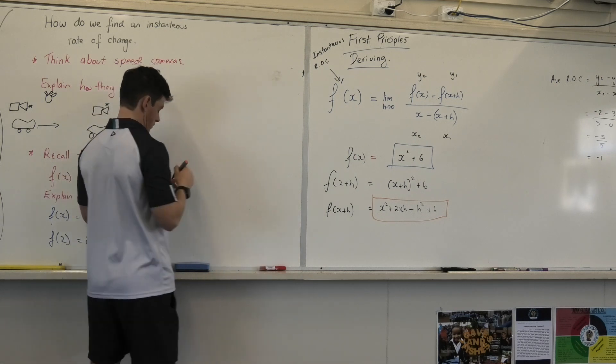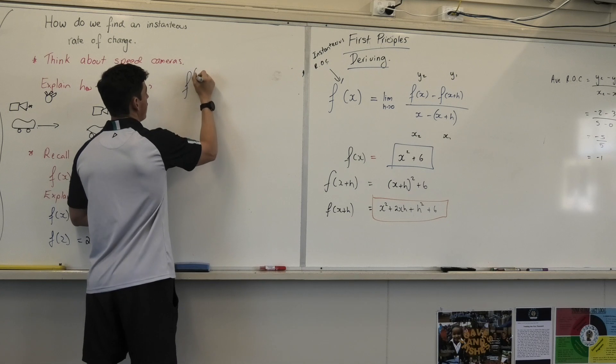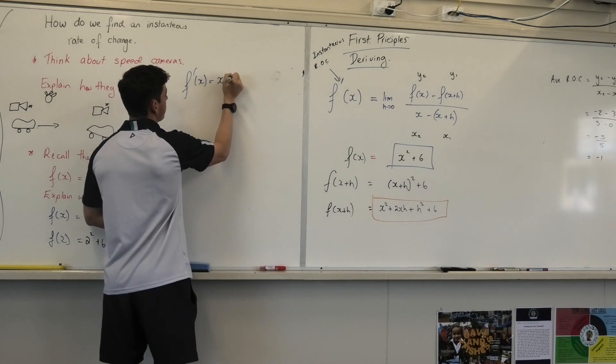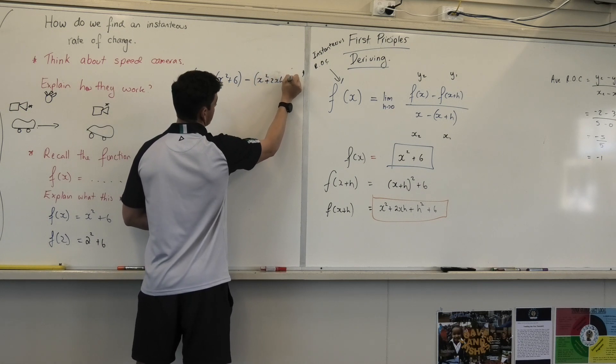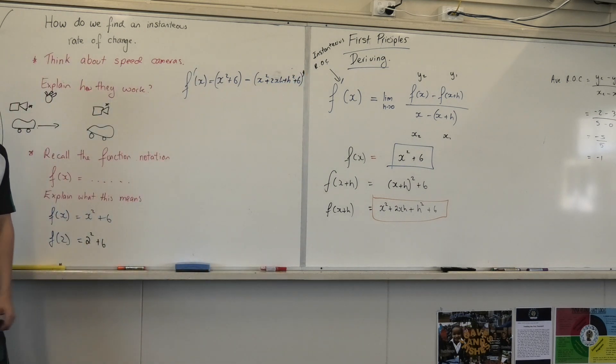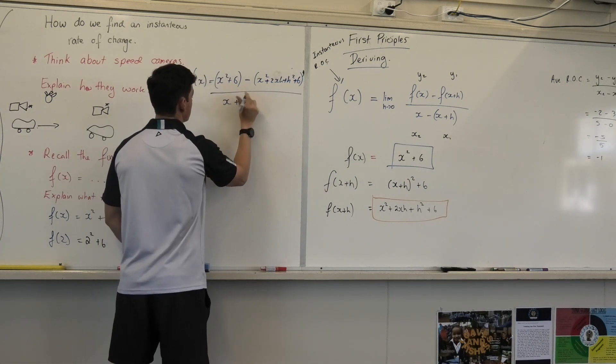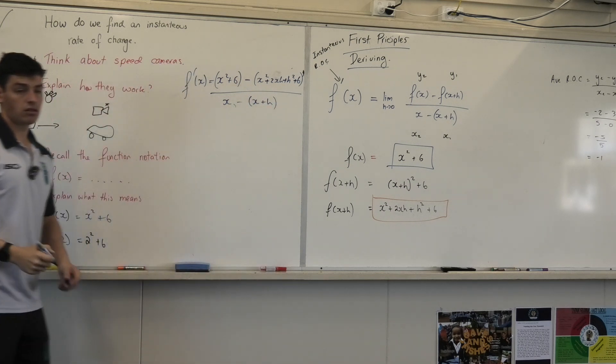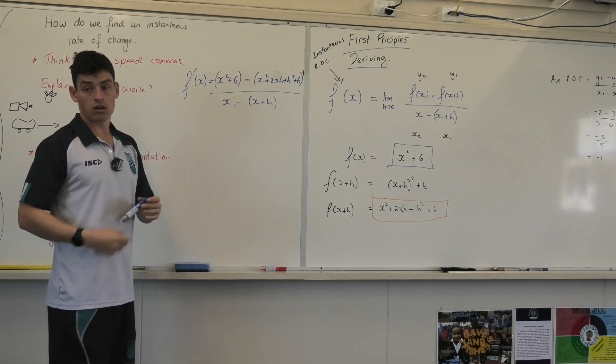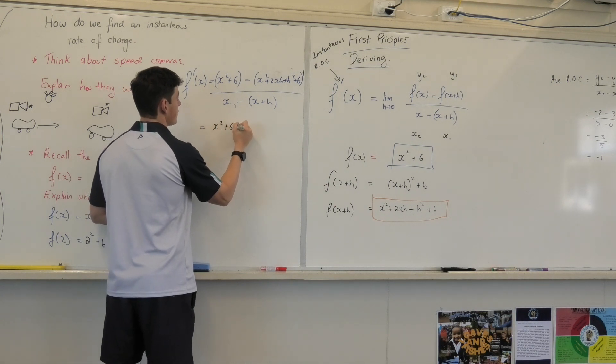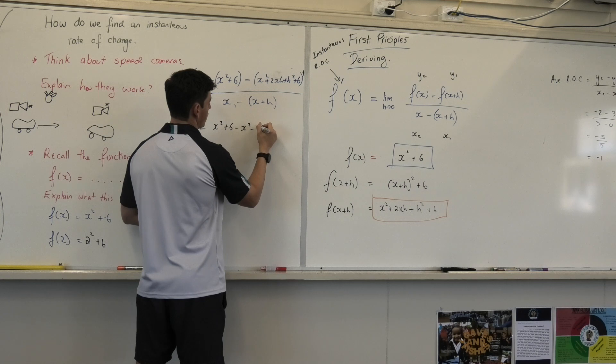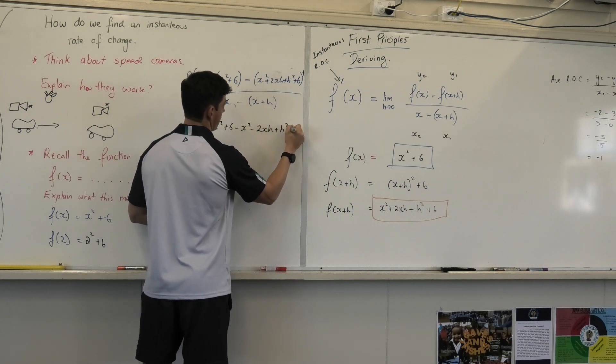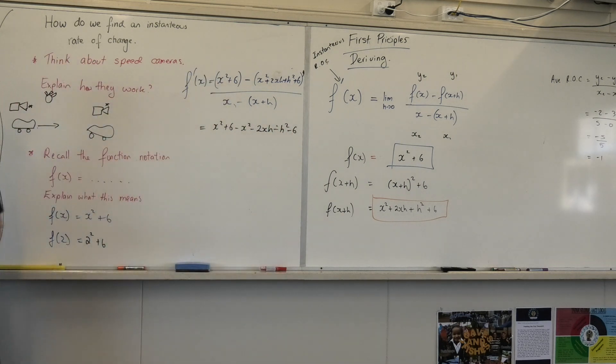So I've got f'(x) equals, instead of fx, I'll write x squared plus 6 minus x squared plus 2xh plus h squared plus 6 over x plus h. Now remember, the negatives have got to go into all those terms. So what I really have is x squared plus 6 minus x squared minus 2xh minus h squared minus 6. Are we happy with that? That's the top one. I've just put the negative into every one of those terms.